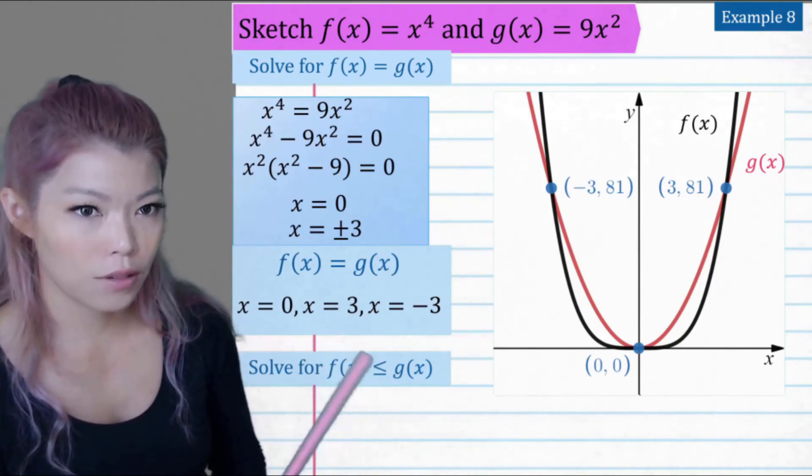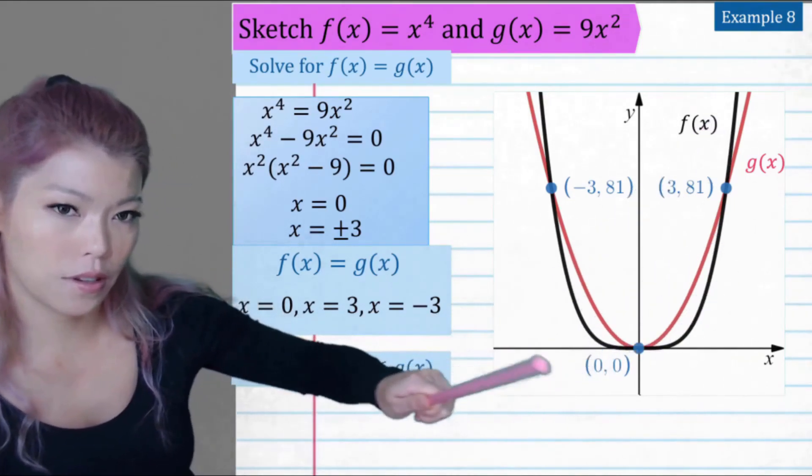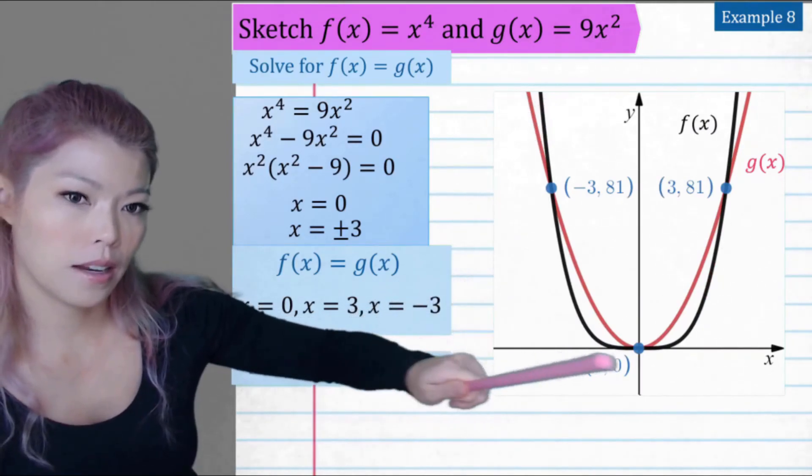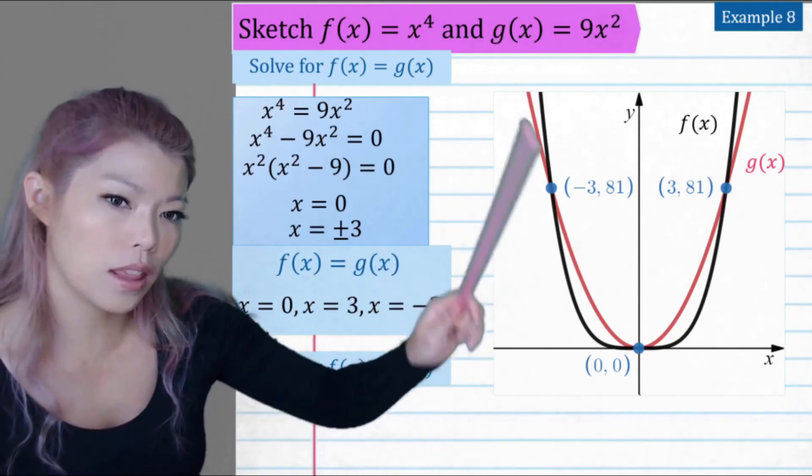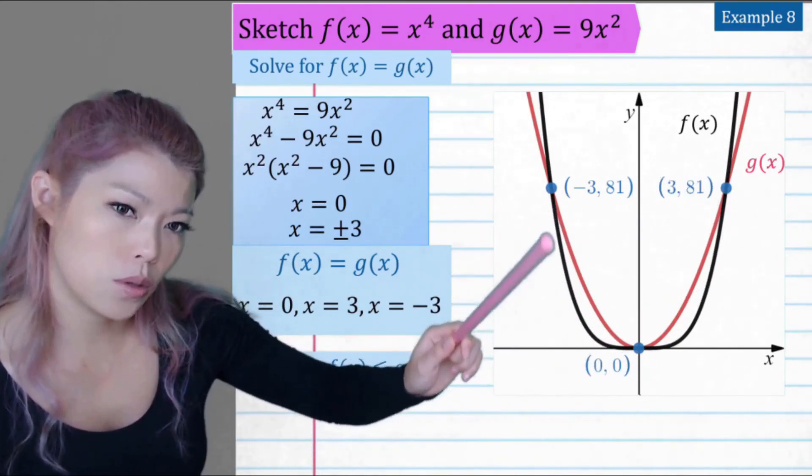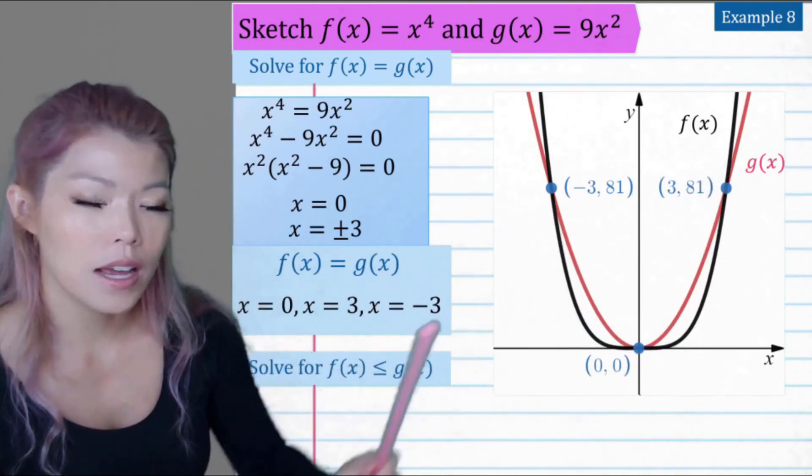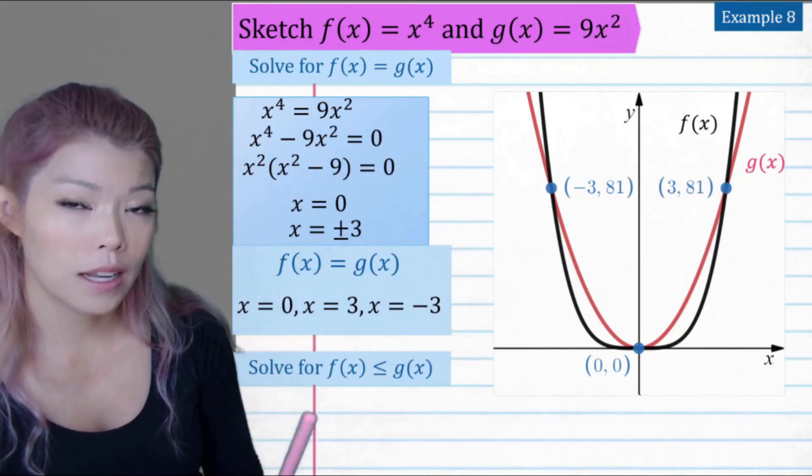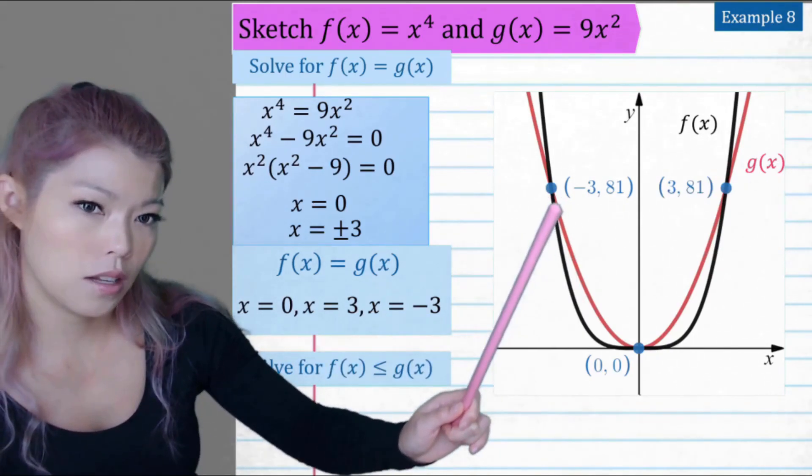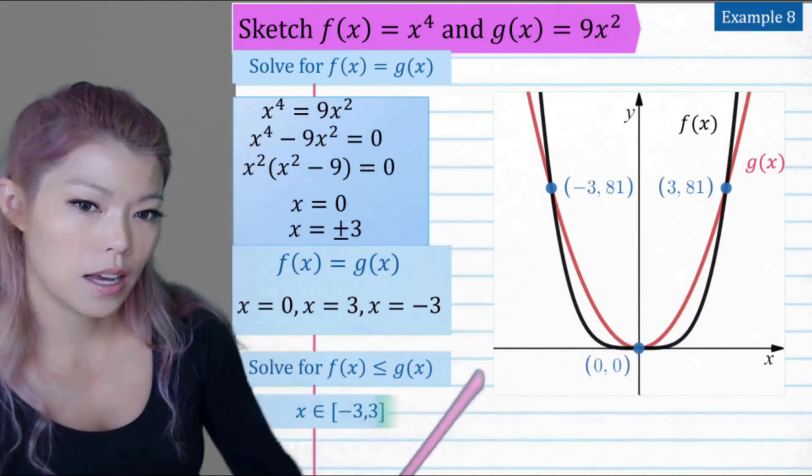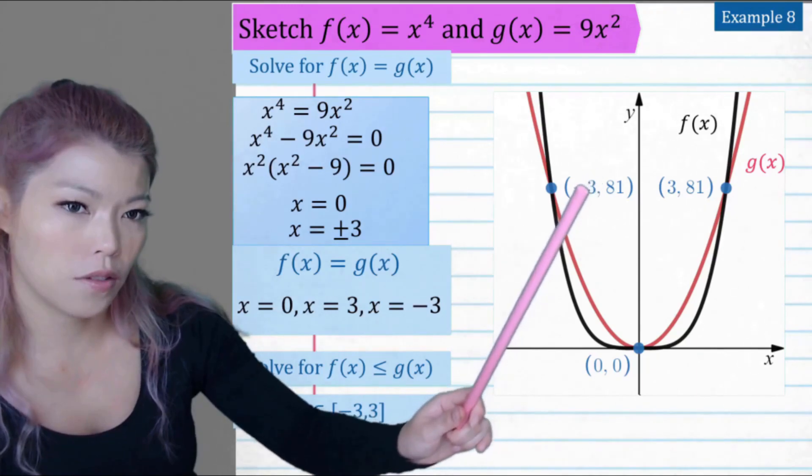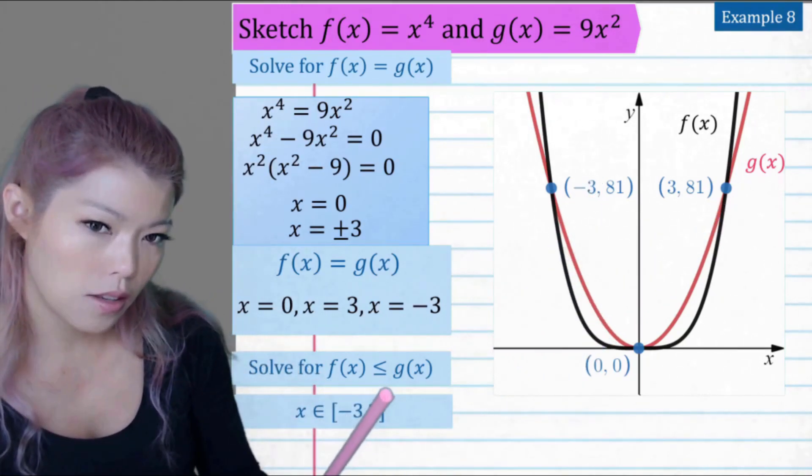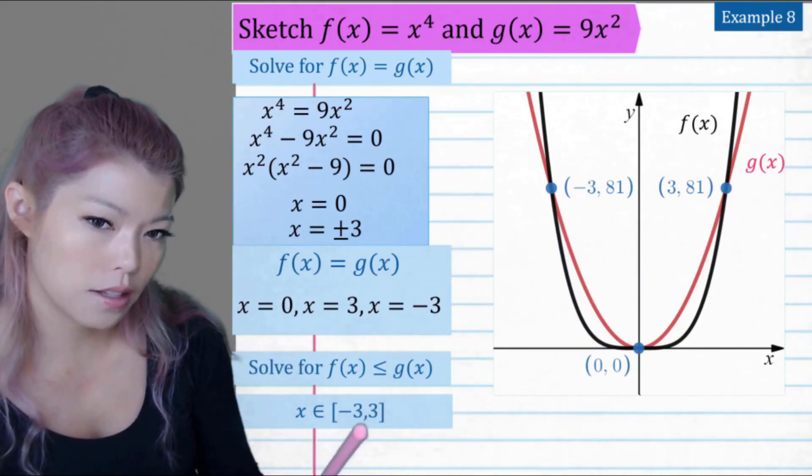Now the question asked you instead solve for f(x) is less than g(x). How would you solve for that? So you look at the f(x) value, so the black line, and you say when is that black line less than or equal to the red line? And we can see it's between this point and that point. So if they ask you to solve for one less than there, but you would find the intercepts, and then you find which line is less. And then you would write, well, it happens in the domain of negative three to three. And because it's equal, I've left the brackets as square.